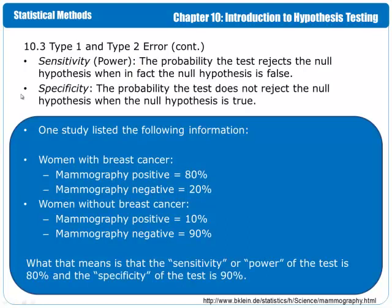There are two other terms that we need to discuss. One is sensitivity, which in statistics is also called power, and the other is specificity. Sensitivity is the probability that the test rejects the null hypothesis when, in fact, the null hypothesis is false. So it's the ability of the test to correctly find the problem.